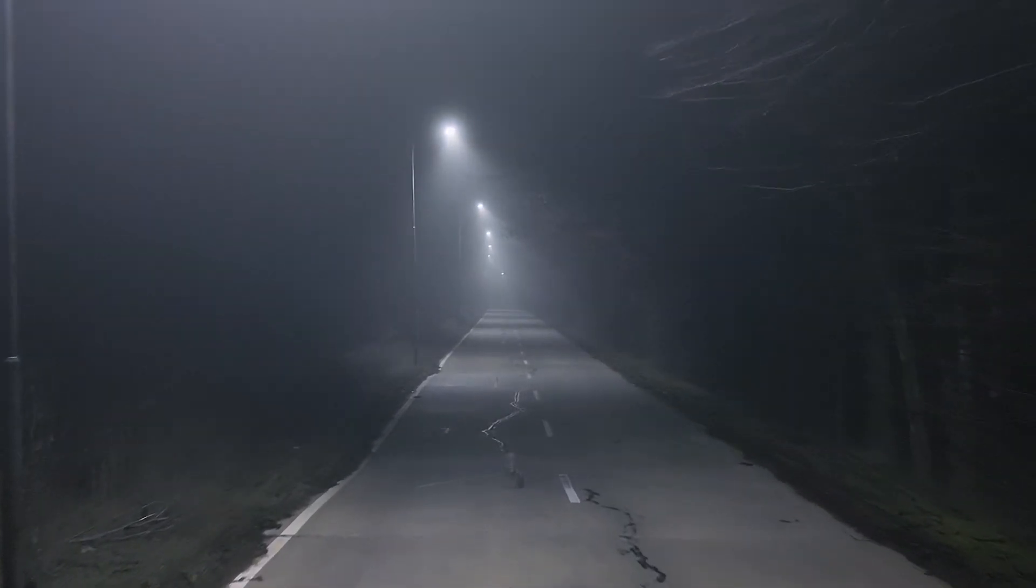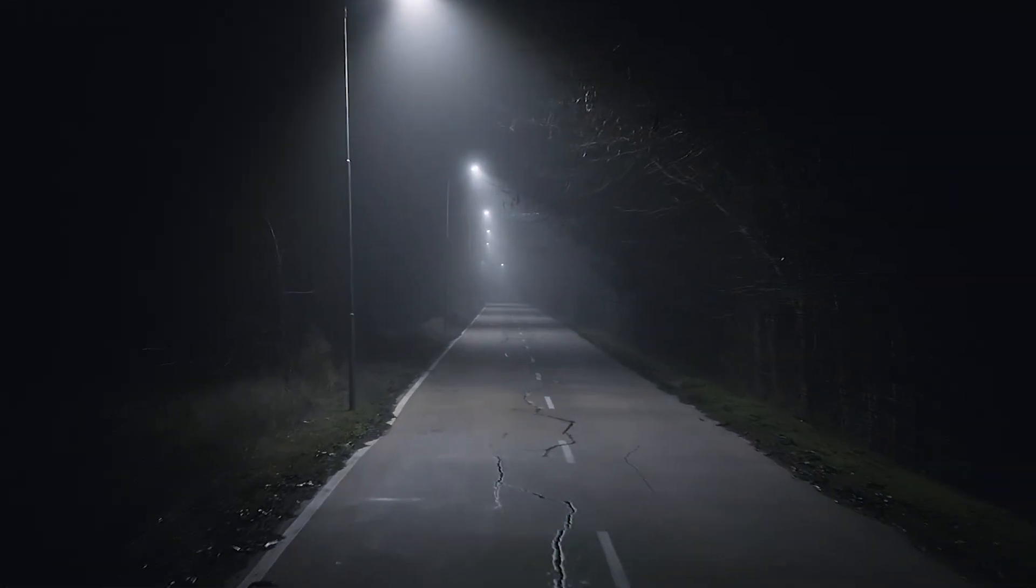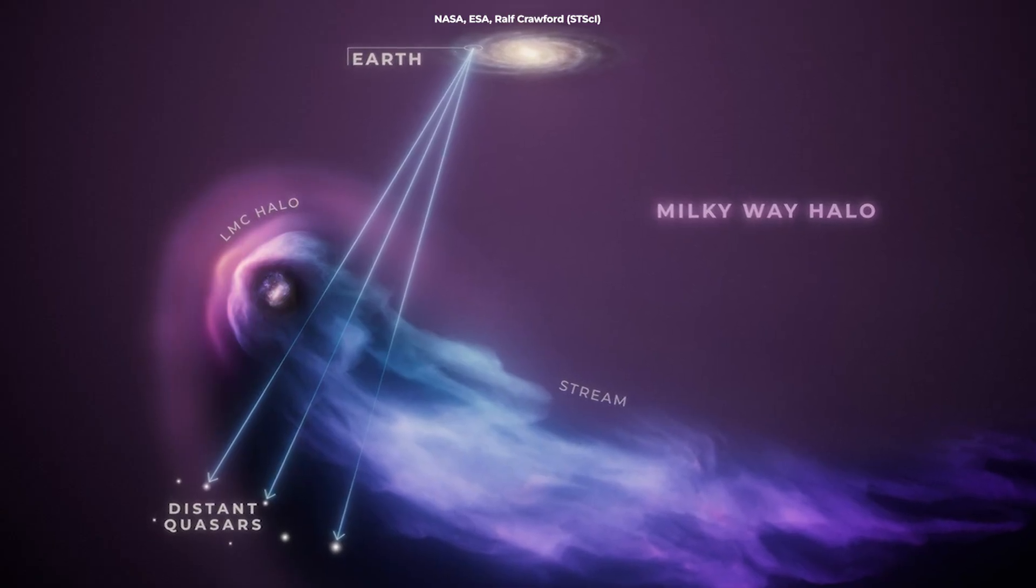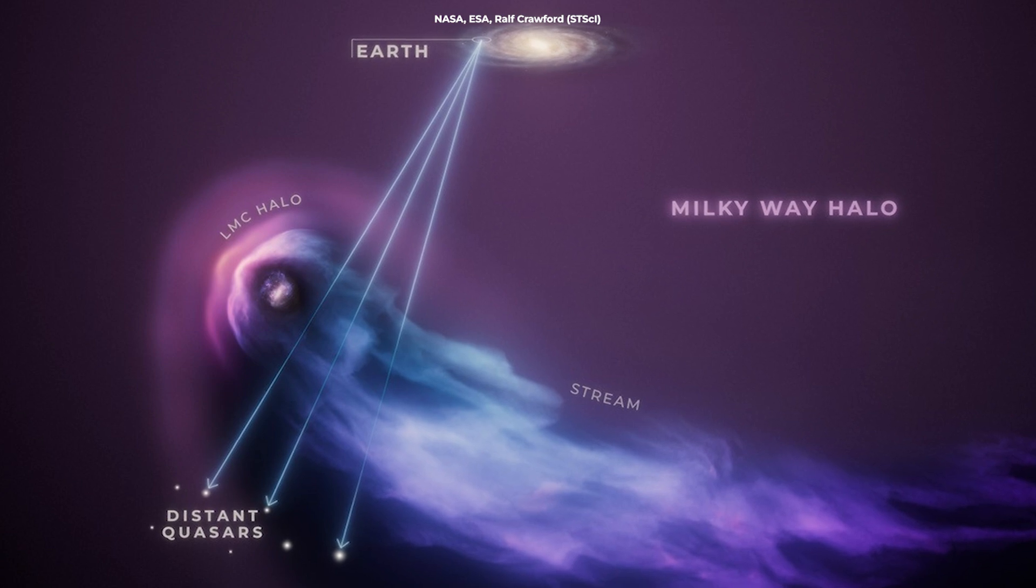Imagine trying to see fog at night. You can't see the fog directly, but you can see how it affects the light from street lamps. Scientists used the same principle, but instead of street lamps, they used 28 incredibly bright quasars shining through the LMC's halo.